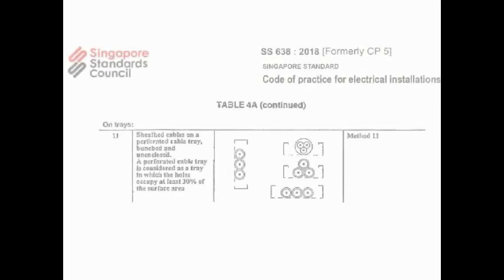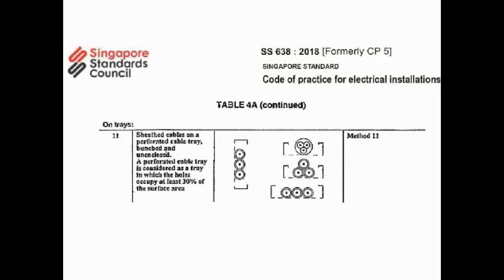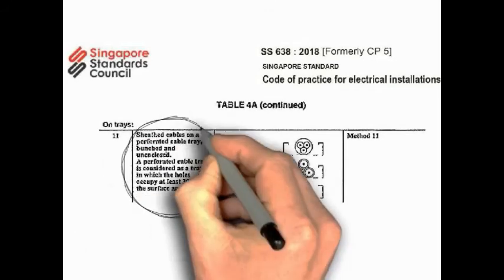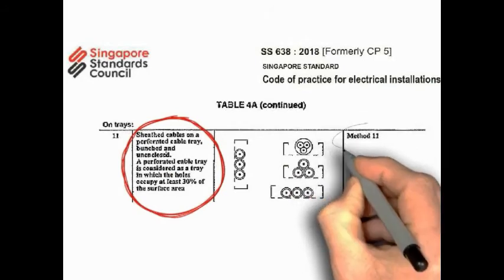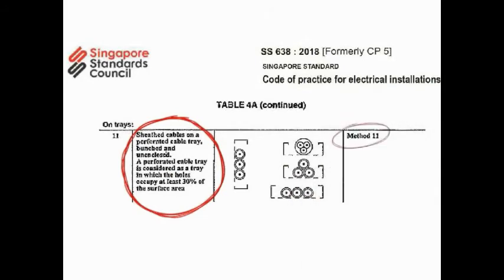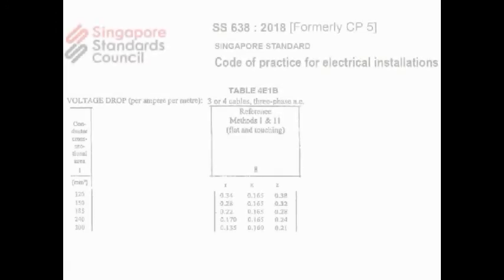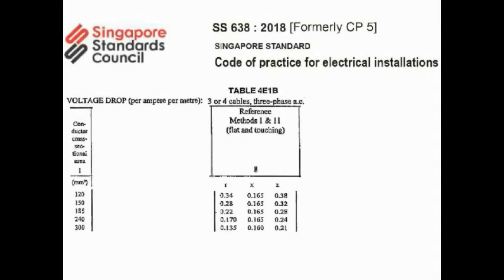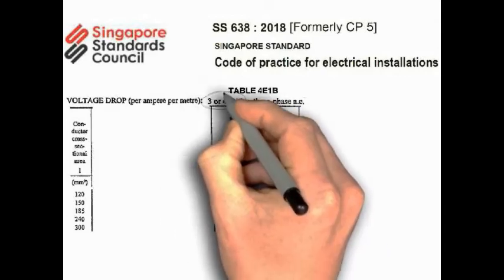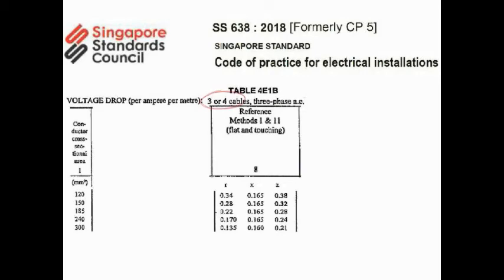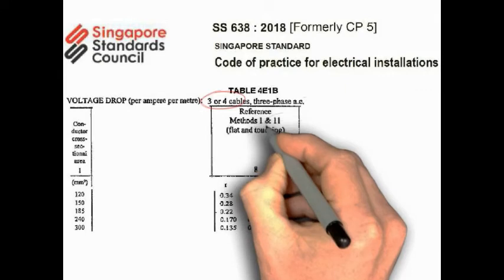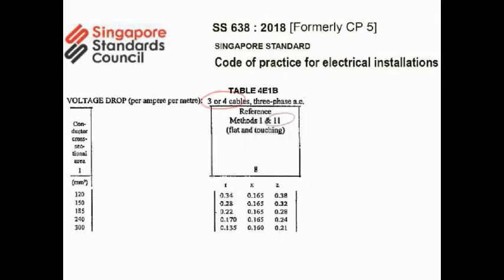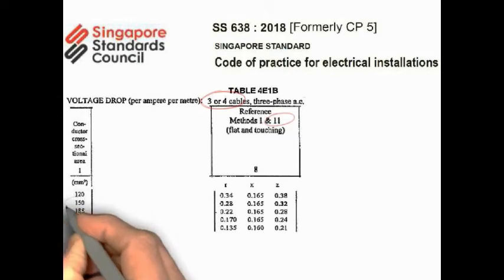First, we go to table 4A and identify based on the cable installation method. Using the perforated cable tray, and this will bring us to the selection of method 11. Now we go to table 4A to estimate our voltage drop. First, we identify the number of cables. For this illustration, we're going to use three or four cables as this is a typical three-phase circuit. From our chart earlier, we see that using the perforated cable tray brings us to installation method 11.